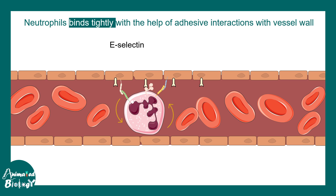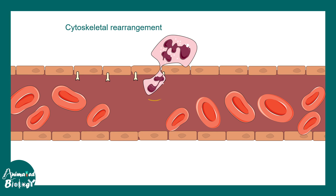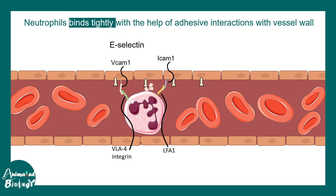Once the neutrophil stops, stronger adhesion interactions occur: VCAM on the blood vessel wall interacts with VLA-4 integrin on the neutrophil surface, and ICAM-1 interacts with LFA-1. All of this leads to cytoskeletal rearrangement. This step is known as adhesion, where the adhesion becomes progressively stronger.